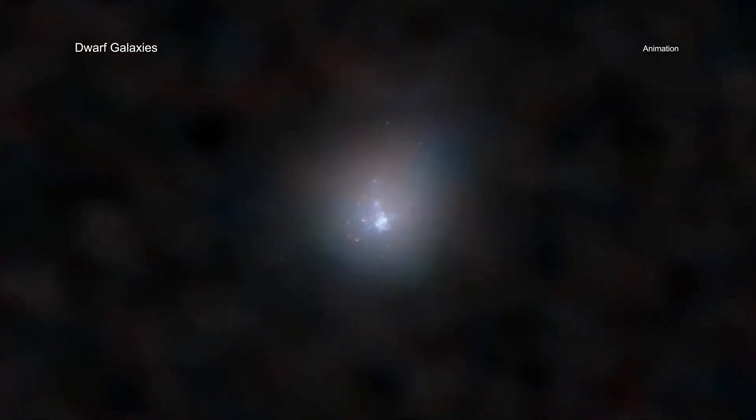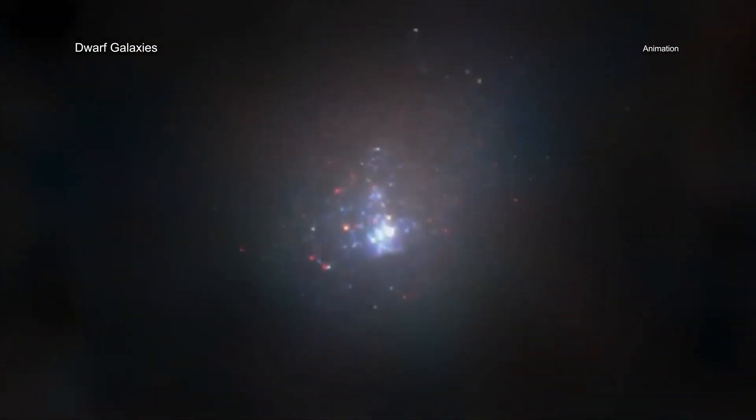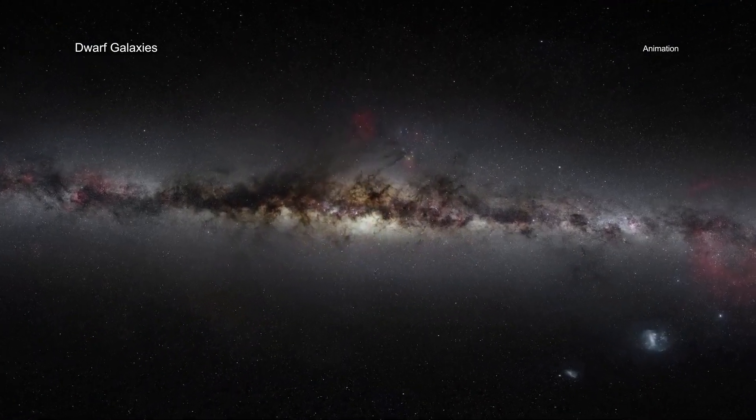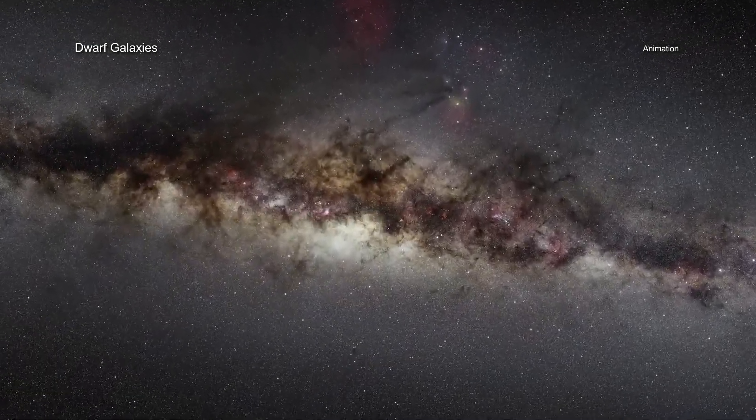Dwarf galaxies by definition contain stars with a total mass less than about 3 billion times that of the Sun, compared to a total mass of about 60 billion suns estimated for the Milky Way.